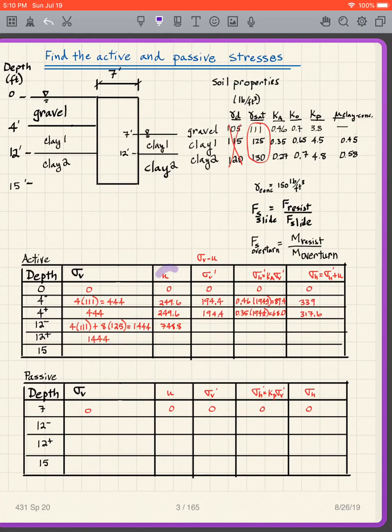We can get our pore pressure, u, by looking at the water table. So I'm here, down below the water table. I'm here, down below the water table. So I'm going to have 4 times 62.4. 4 times 62.4. And this will be 12 times 62.4. So remember, we are in English units. So the unit weight of water, density of water is 62.4 pounds per cubic foot.